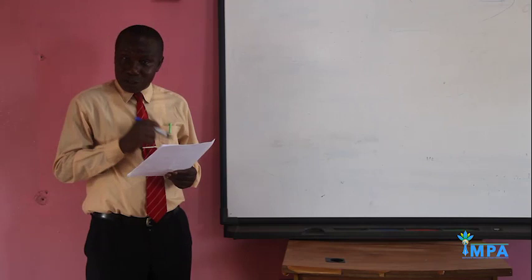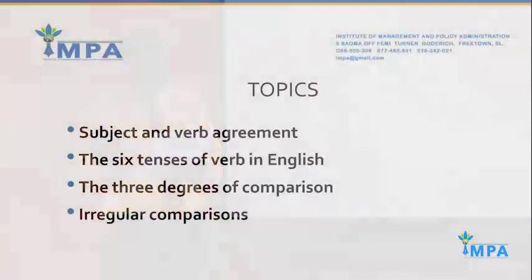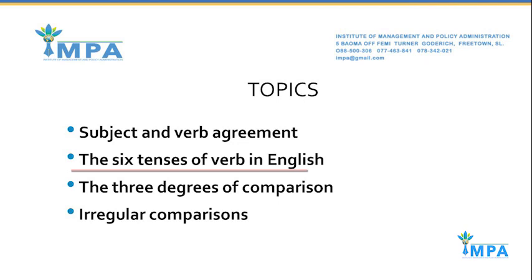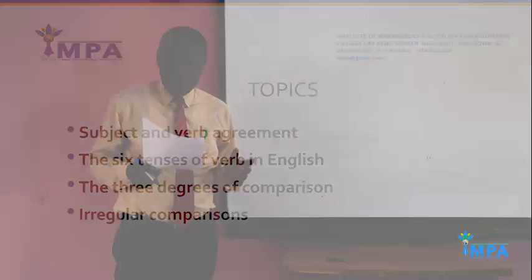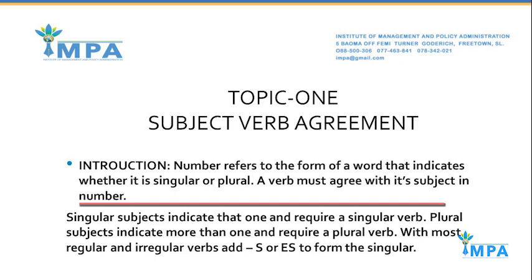Today we are going to deal with Community and Skills. I am Mr. Simon St. Kelly, lecturer at IMPAR and Bowman. First, I want us to look at the course outline. Topics covered are subject-verb agreement, the six tenses of verbs in English, the three degrees of comparison, correcting double comparisons, and irregular comparisons. Let us begin with topic one: subject-verb agreement, introduction.